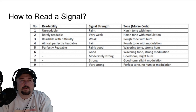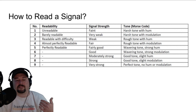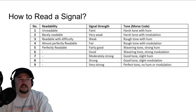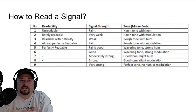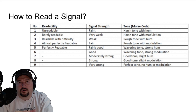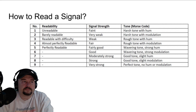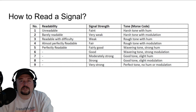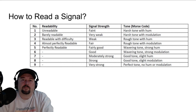A lot of times what you'll see is people will still give the 5 for readability, and then drop the signal strength down if they have trouble. So they'll say, oh, you're a 5-6, 5-5, 5-4, something like that. For some reason there seems to be a reluctance to give a readability below a 5.